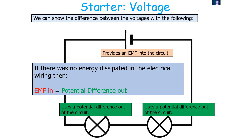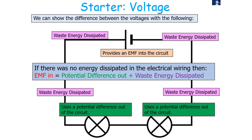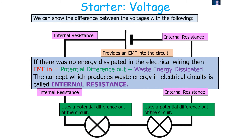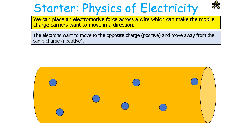If there was no energy dissipated in the electrical wiring, then EMF in would equal PD out. But there is energy dissipated in the wiring, so EMF in is equal to potential difference out plus waste energy dissipated — which we call the lost volts. This concept, which produces the waste energy in the electrical circuits, is called the internal resistance. We can place an electromotive force across a wire, which can make the mobile charge carriers want to move in a particular direction.